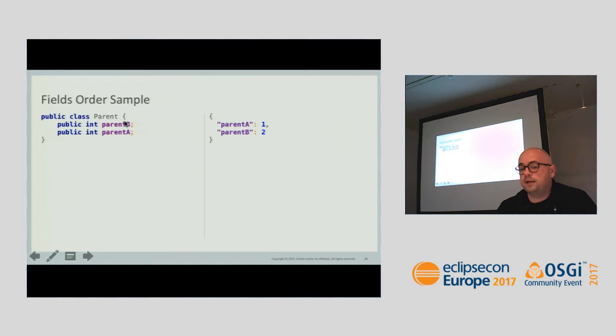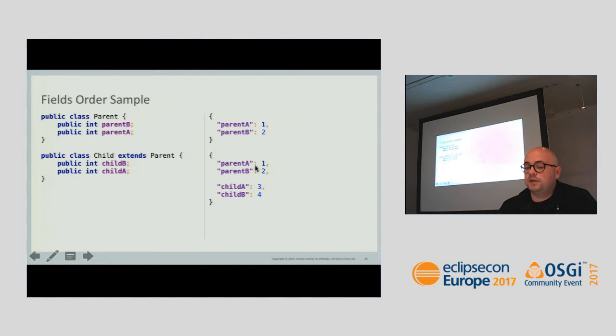Here's a sample. Imagine we have a parent class with two fields: parentB and parentA. When serialized, they appear sorted alphabetically. If we have inheritance — a child class extending the parent — parent fields come first, then child class fields, and all of them are sorted. This is the default behavior, and it can be changed by customization as well.